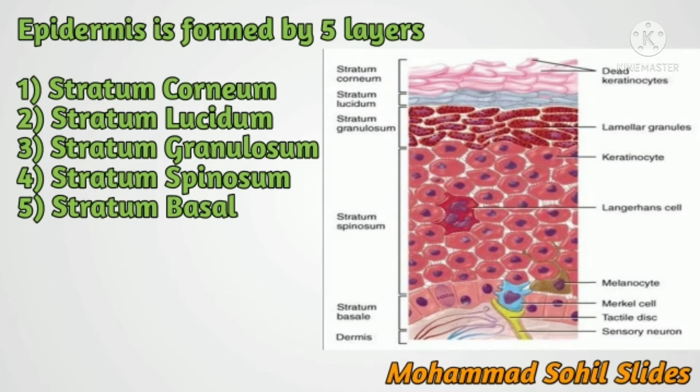Second, stratum lucidum, which is made up of flattened epithelial cells. The epithelial cells have degenerated nuclei, and in some cells the nucleus is absent. This layer looks like a homogeneous translucent zone.